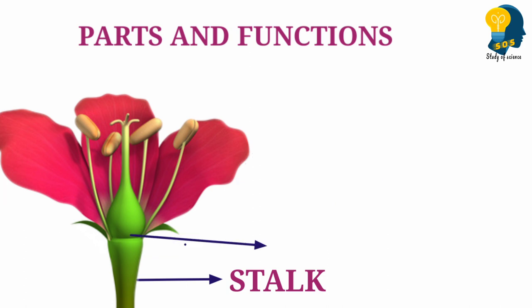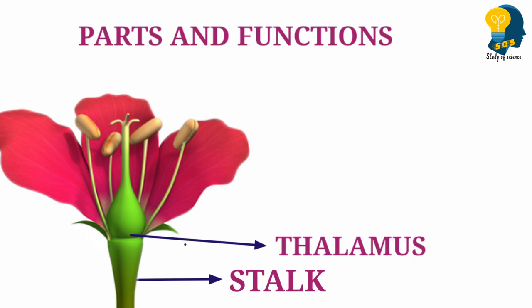If you look at this structure, this is the thalamus. Just above the stalk, at the top of the stalk, we can observe a swollen-like structure. This swollen-like structure is called as the thalamus. The thalamus holds the other portions of the flower — the whole portion is held by the thalamus. It is the swollen part of the flower.